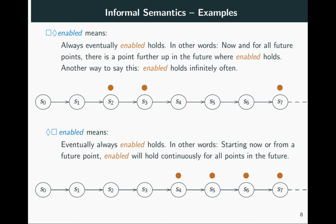The next example is somewhat dual to the previous one, combining eventually and always in the other order. It says eventually always enabled holds — in other words, either starting from now or from sometime in the future, enabled will start holding and will never stop holding. From some point on, all states are labeled with brown. Note that eventually always is a stronger property than always eventually.